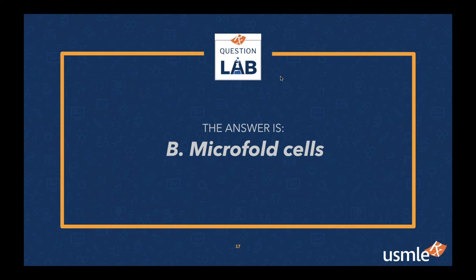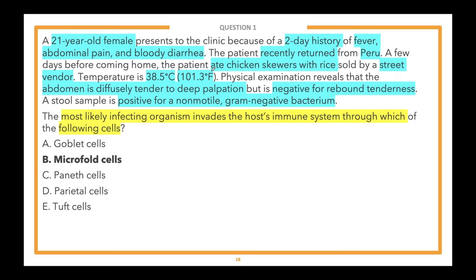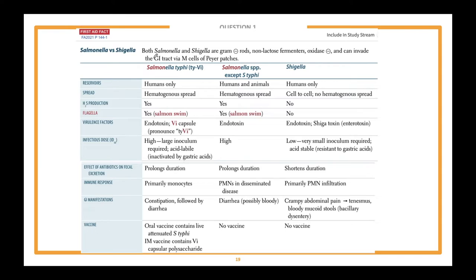This patient has diffuse abdominal pain, fever, and bloody diarrhea after consuming food from a street vendor. This patient likely has shigellosis due to Shigella flexneri — a common cause of bloody diarrhea in low-income countries. Looking at the First Aid table comparing Salmonella versus Shigella: these are gram-negative rods, and they invade the GI tract through the M cells — microfold cells — of Peyer's patches. That's what the M stands for.